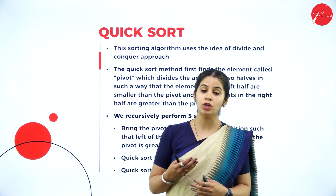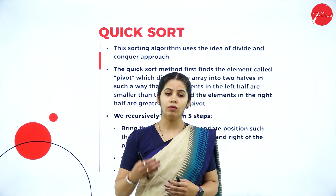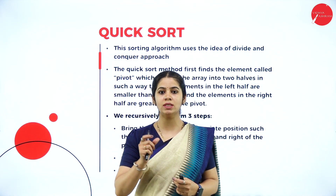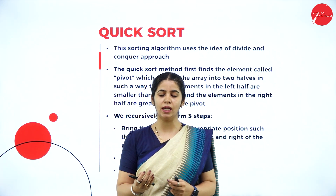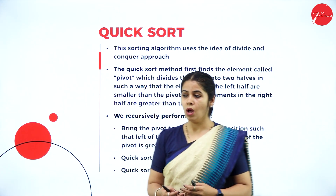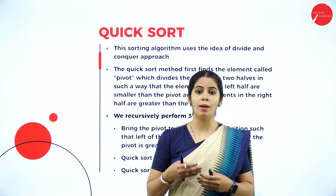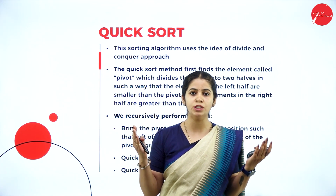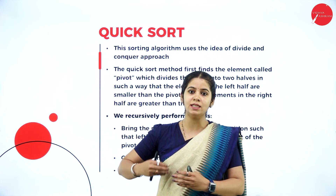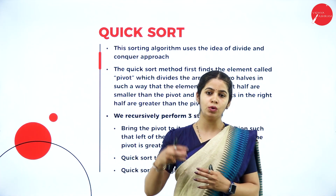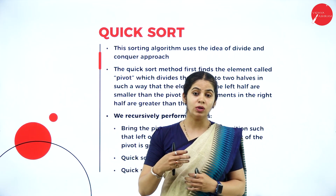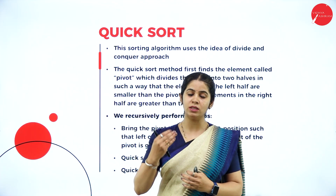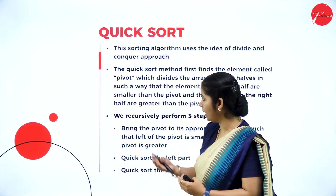What is quick sort? We have seen different sorting algorithms: insertion sort, bubble sort, selection sort, and one more algorithm which we have is quick sort. The name itself says it sorts the elements in ascending or descending order very quickly. That's why it is named as quick sort. What exactly are we doing in quick sort? We are applying the concept called divide and conquer.